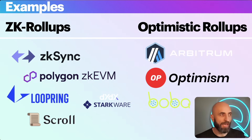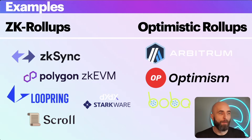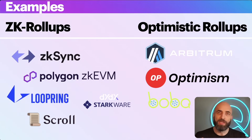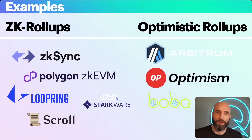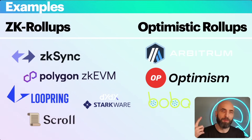Let's look at some projects utilizing both these technologies. In the ZK rollups world, some of the better known names are zkSync, Polygon zkEVM, Loopring, Scroll, Cairo, and dYdX on Starkware. In the optimistic universe, it's Arbitrum, Optimism, and Boba Network.